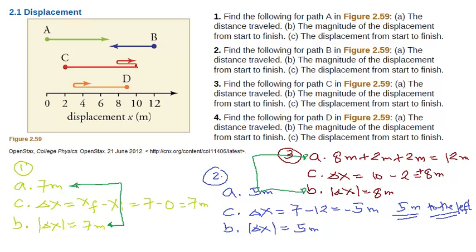And similarly, for part D, for path D, for number 4, this place, a distance will just be what? Starts at 9, going to 3, that's 6 meters, right? 6 meters plus, going a little bit from 3 to 5, that's 2 meters. So, total distance traveled is 8 meters.